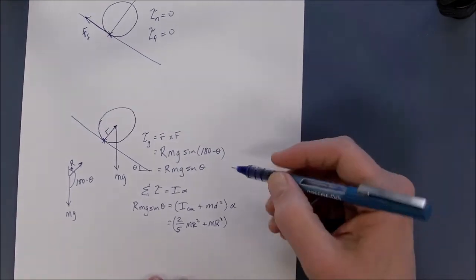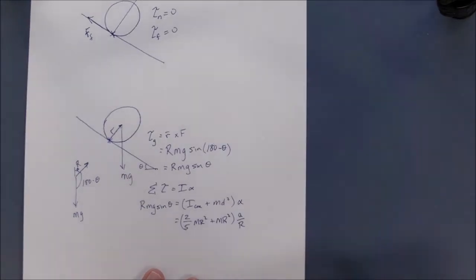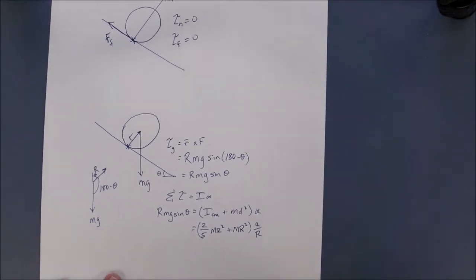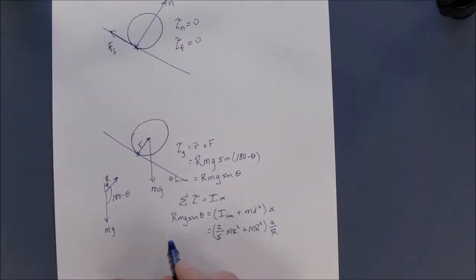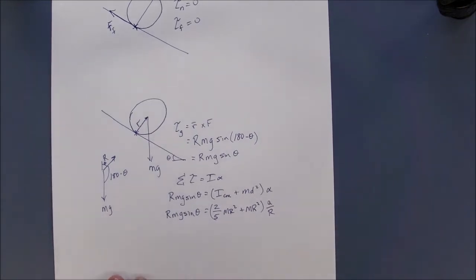Alpha is A over R. That's common substitution. And so you end up with this equation there.